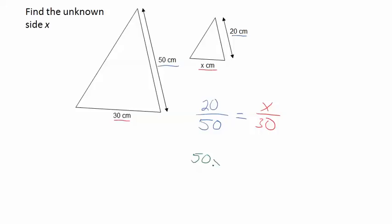so 50 times X is equal to 20 times 30, and 20 times 30 is 600.